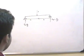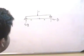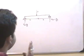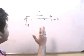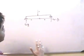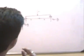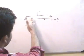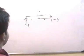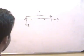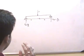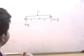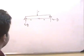Now, to find the shear force and bending moment, we need to define at what cross section we are interested, because the shear force and bending moment keep on changing throughout the length. So essentially, we need to define at what cross section we are interested to find the shear force and bending moment.